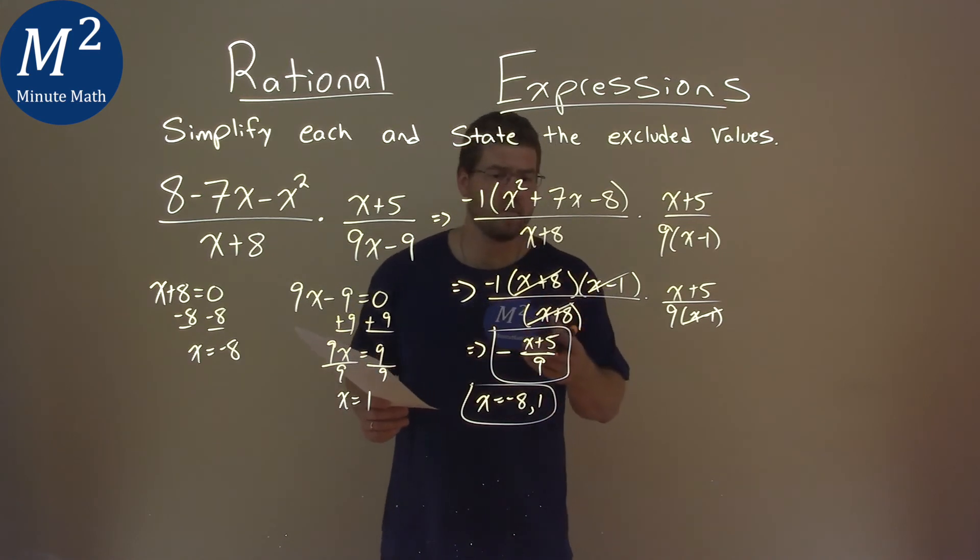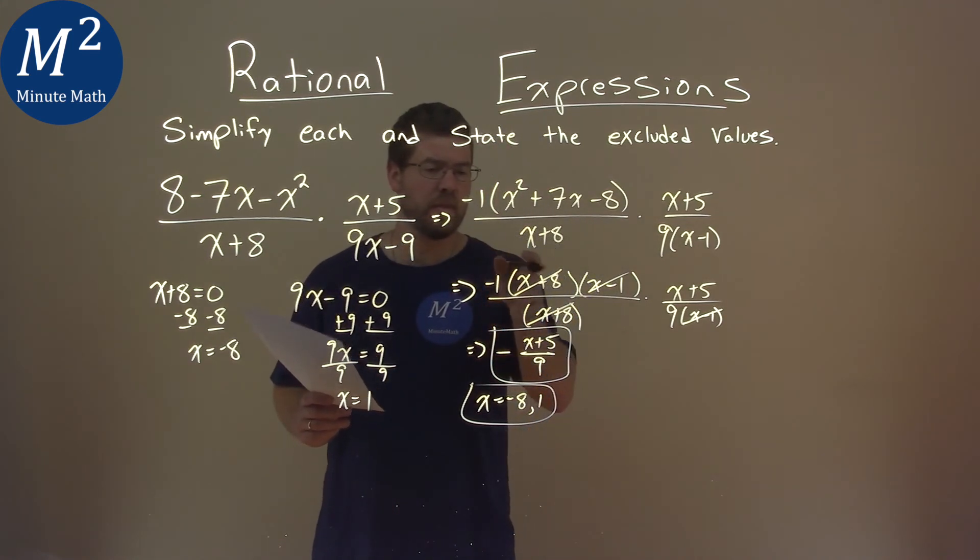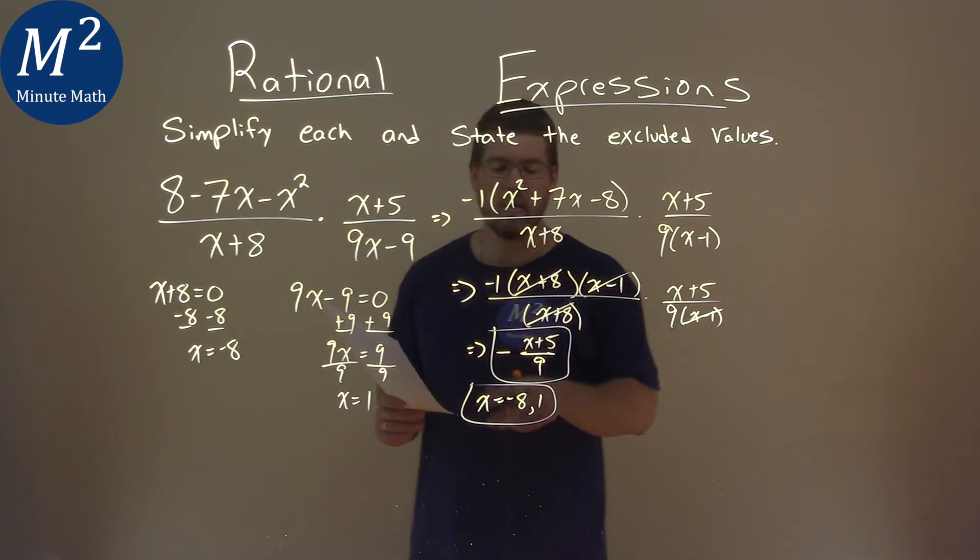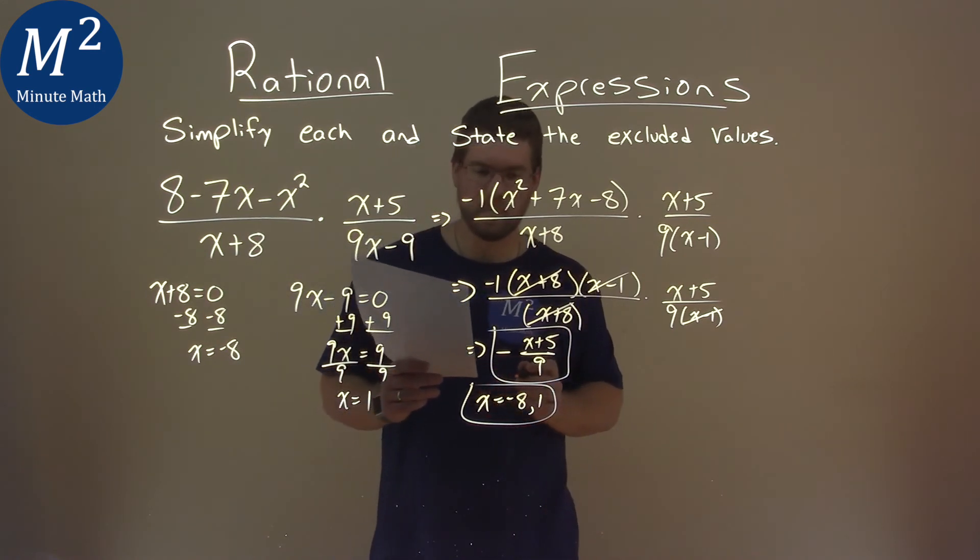And so again, my final answer, simplified, is negative x plus 5 over 9. And our excluded values are negative 8 and positive 1.